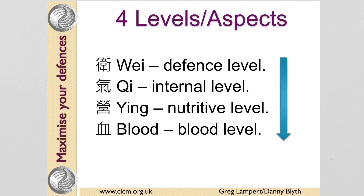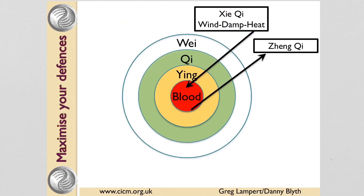The four levels are Wei — defence; Qi — the secondary defence; Ying — the nutritive level; and the blood level. In terms of the nature of a pathogen, Xie Qi tends to penetrate deeper into these levels, while our Zheng Qi — our upright Qi — wants to throw the pathogen up and out.